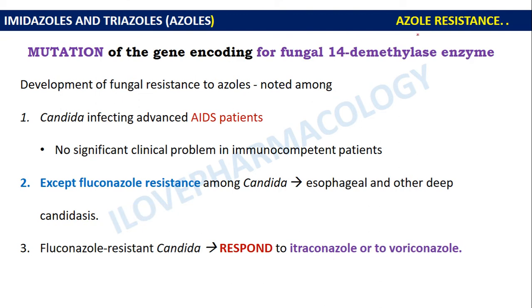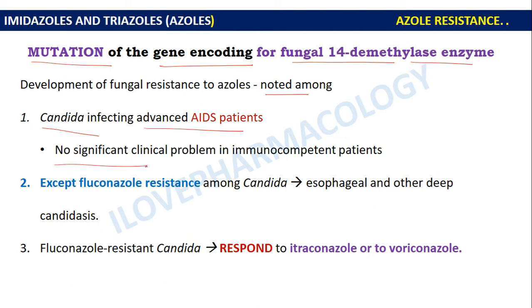Regarding resistance associated with azoles, resistance is mainly due to mutation of the gene encoding for the fungal 14-α-demethylase enzyme. Development of fungal resistance to azoles has been noted among Candida infecting advanced cases of AIDS patients. There is no significant clinical problem associated with immunocompetent patients, except that fluconazole resistance among Candida has increased the risk of esophageal and other deep candidal infections.